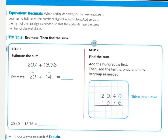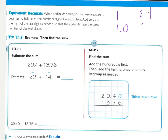Equivalent decimals: when adding decimals, you can use equivalent decimals to help keep the numbers aligned in each place. Add zeros to the right of the last digit as needed so that the addends have the same number of decimal places. For example, if I had 1, I could also write 1.0 — it's still just 1. Or I could have 2 and 4 tenths, which is the same as 2 and 40 hundredths. This just has the zero on there, but these are equivalent.